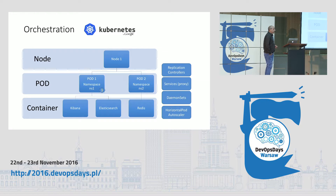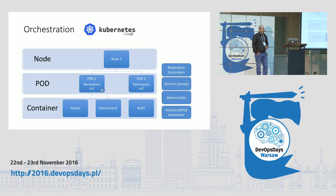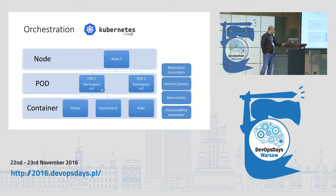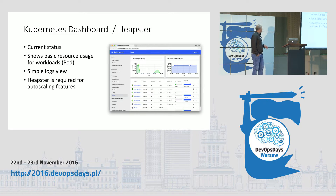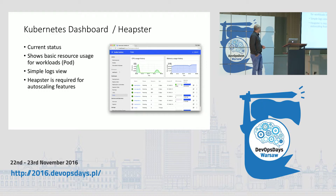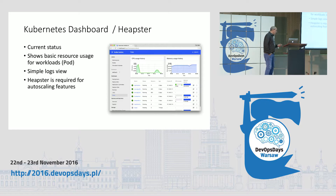Kubernetes has features like autoscaler, so it's really feature-rich. It is more complex to set up and to get started, but it comes with many features. It also has a simple dashboard. You can see metrics when you run the Heapster tool with the Kubernetes dashboard, giving you a simple view of every pod's current resource usage and a simple view of the logs. Heapster is also required for autoscaling — it can monitor resources used by applications and start new instances.